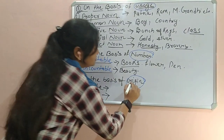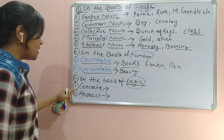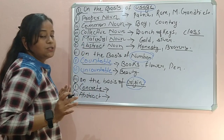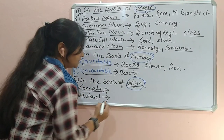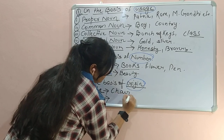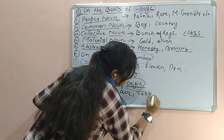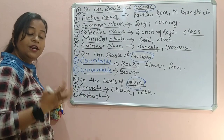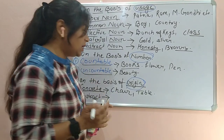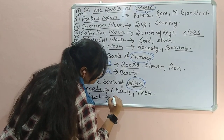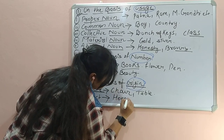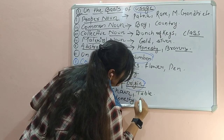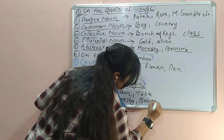Let's come to the last basis, which is on the basis of origin. The first part is concrete noun — concrete noun is something which can be touched and seen, like chair, table. But abstract noun is a noun which can only be felt, not seen from our eyes — like honesty, bravery, etc.